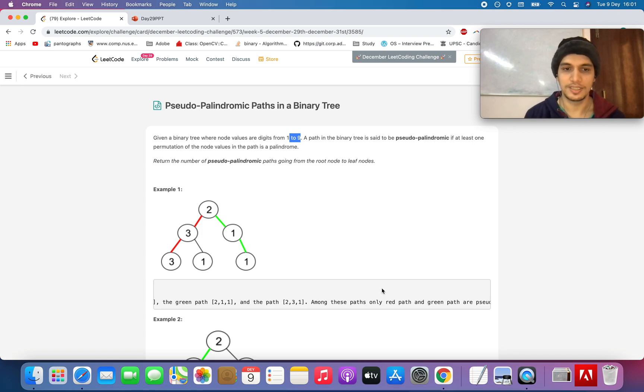That's it, you need to count such palindromic pseudo-palindromic paths that can be generated from this tree, provided the paths are from the root of the tree to the leaf nodes.